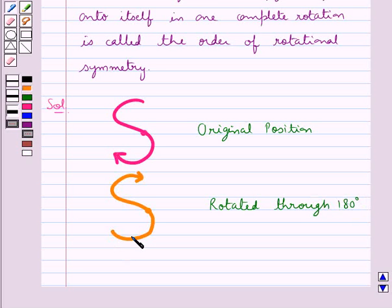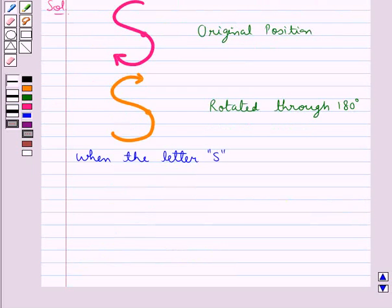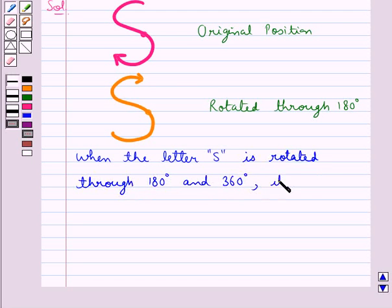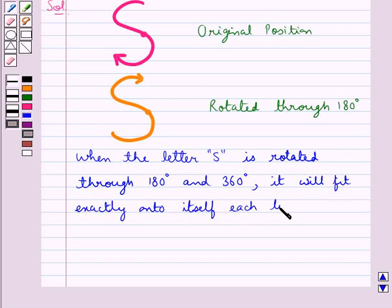we would get this S. So when the letter S is rotated through 180 degrees and 360 degrees, it will fit exactly onto itself each time.